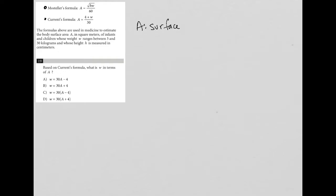This question starts off by giving us two separate formulas: one for Mosteller and one for Current. The question states the formulas are used in medicine to estimate the body surface area A, where A represents surface area in square meters. The weight W ranges between 3 and 30 kilograms, and the height H is measured in centimeters.